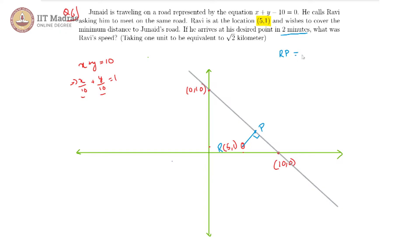We can calculate it from that formula, which is ax1 plus by1 plus c, the modulus divided by square root of a square plus b square. And now here a is 1, b is also 1, c is minus 10.